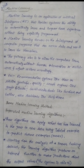Machine learning methods: there are four types — supervised machine learning, unsupervised machine learning, semi-supervised machine learning, and reinforcement learning. Supervised machine learning algorithms apply what has been learned in the past to new data using labeled examples to predict future examples.